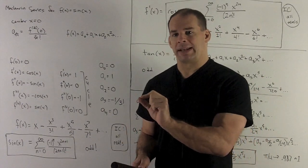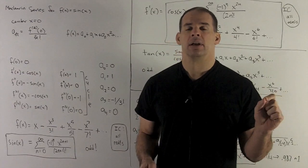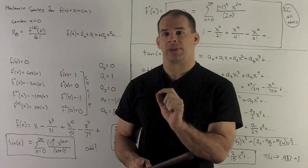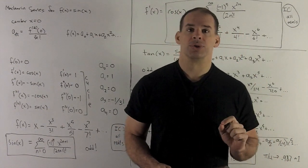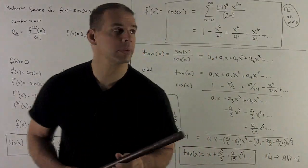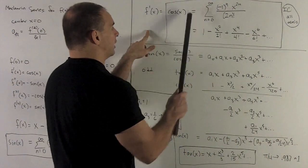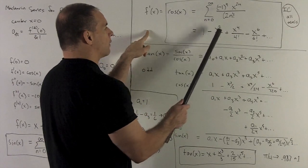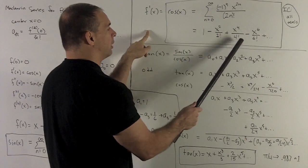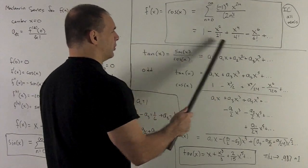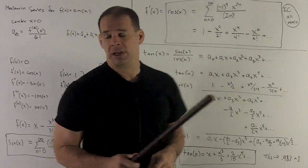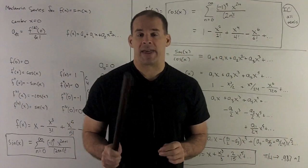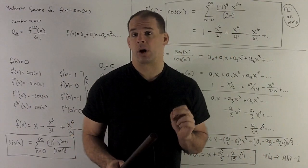After cancellation, all that's left in the denominator is 1 multiplied through 2n, which gives (2n) factorial. Writing out the first few terms, we get 1 minus x squared over 2 factorial, plus x to the 4th over 4 factorial, minus x to the 6th over 6 factorial. These first four terms are just the derivative of the corresponding terms of the sine series.